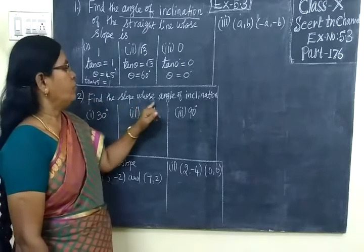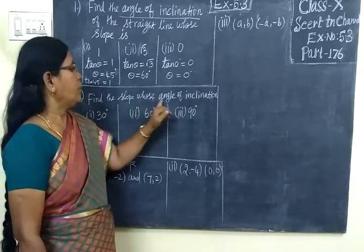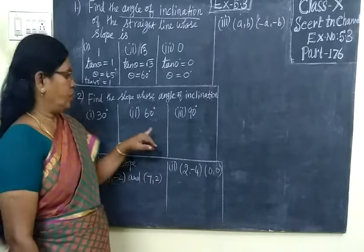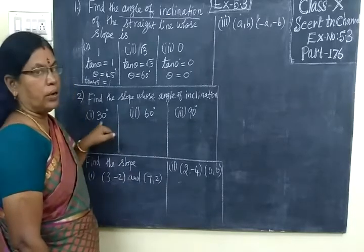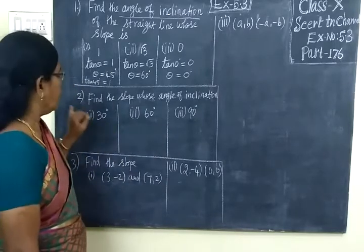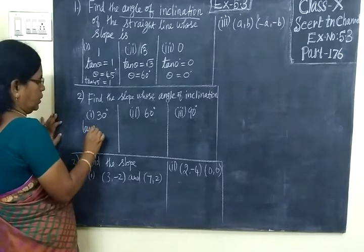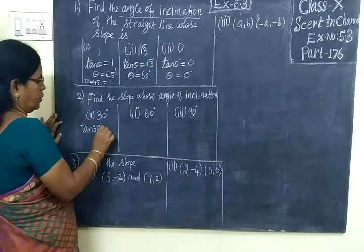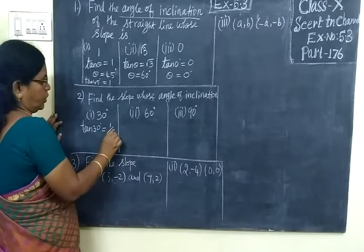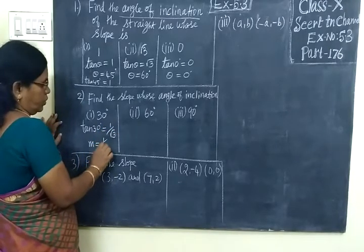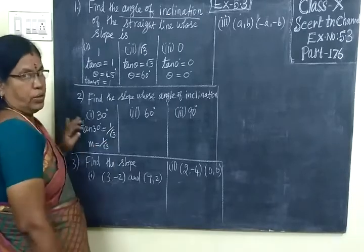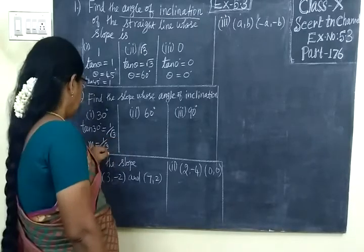Now, find the slope whose angle of inclination is given. So, tan 30° equals 1/√3. That means slope m equals 1/√3. Slope is defined by m.